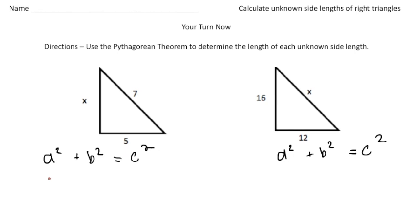So it's going to be a squared plus our b value is 5. So 5 squared equals our c value which is 7. So 7 squared. So it's going to be a squared plus 25 equals 49.